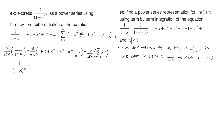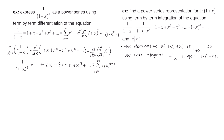Next we do term by term differentiation. The derivative of 1 is 0, the derivative of x is 1, the derivative of x squared is 2x, and so on. For the sigma notation, to take the derivative of x to the n we bring the n to the front and subtract 1 from the exponent. Checking the terms we get 1, 2, 3, 4, which means our lower index n must start at 1. Plugging in n equals 1 gives 1 times x to the 0, which is 1. Plugging in n equals 2 gives 2 times x to the 1, which works. So 1 over 1 minus x squared equals the sum from n equals 1 to infinity of n times x to the n minus 1.